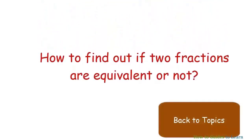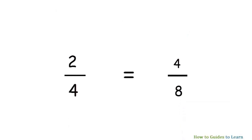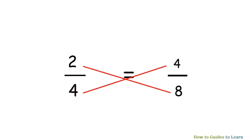How to find out if two fractions are equivalent fractions? Let's take the fractions two by four and four by eight and find out whether they are equivalent or not. We have to multiply the numerator and denominator of one fraction with the denominator of the other fraction. This is also known as cross-multiplication. After multiplying, we have to compare the two products. If both the products are equal, then both the fractions are equivalent fractions.